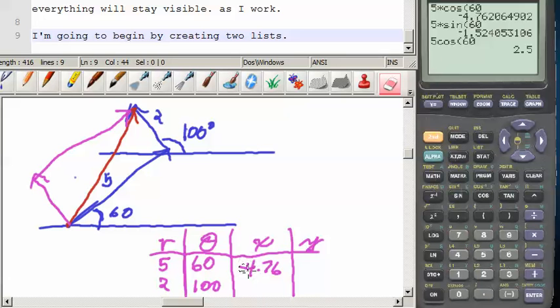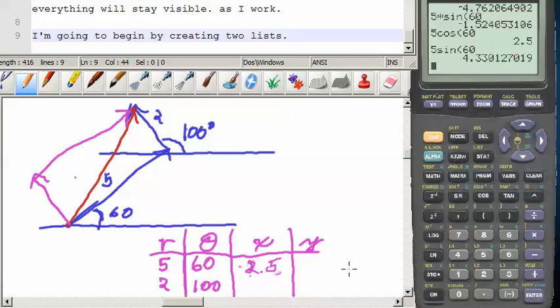So this is 2.5 and y is 5 sine 60 and it turns out to be 4.33. I just usually use 3 significant figures. When in doubt, just use 3 significant figures.